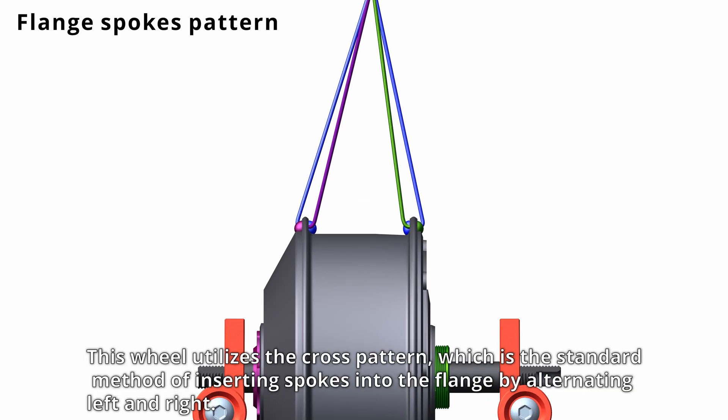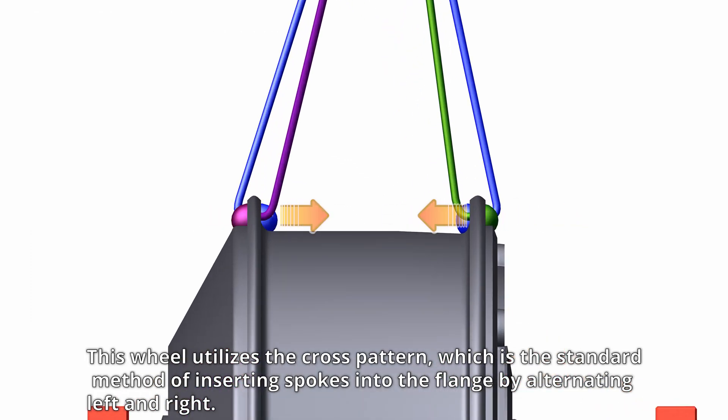This wheel utilizes the cross pattern, which is the standard method of inserting spokes into the flange by alternating left and right.